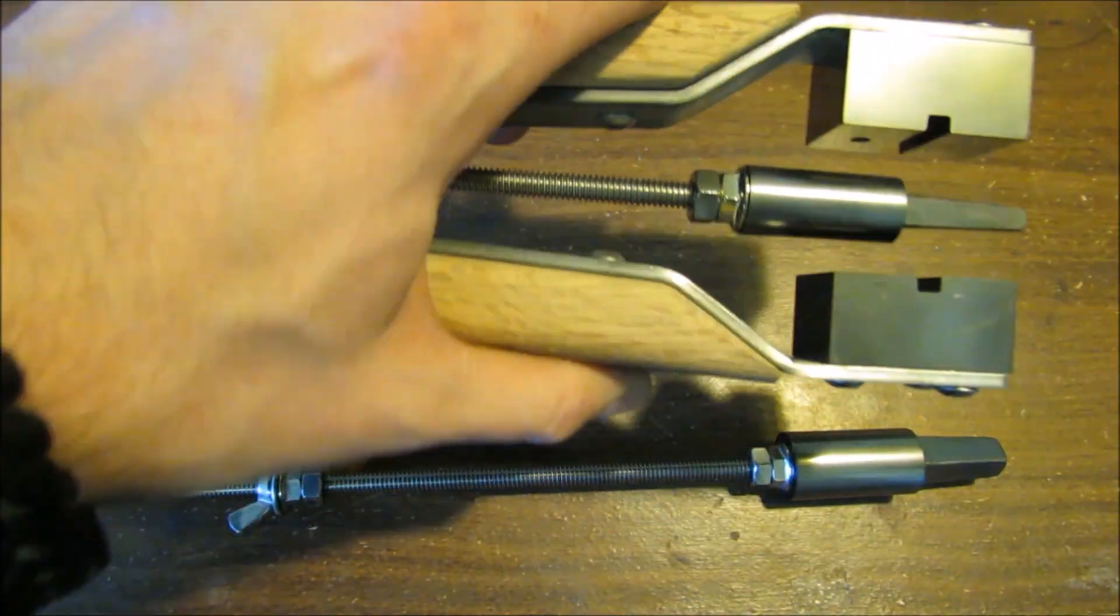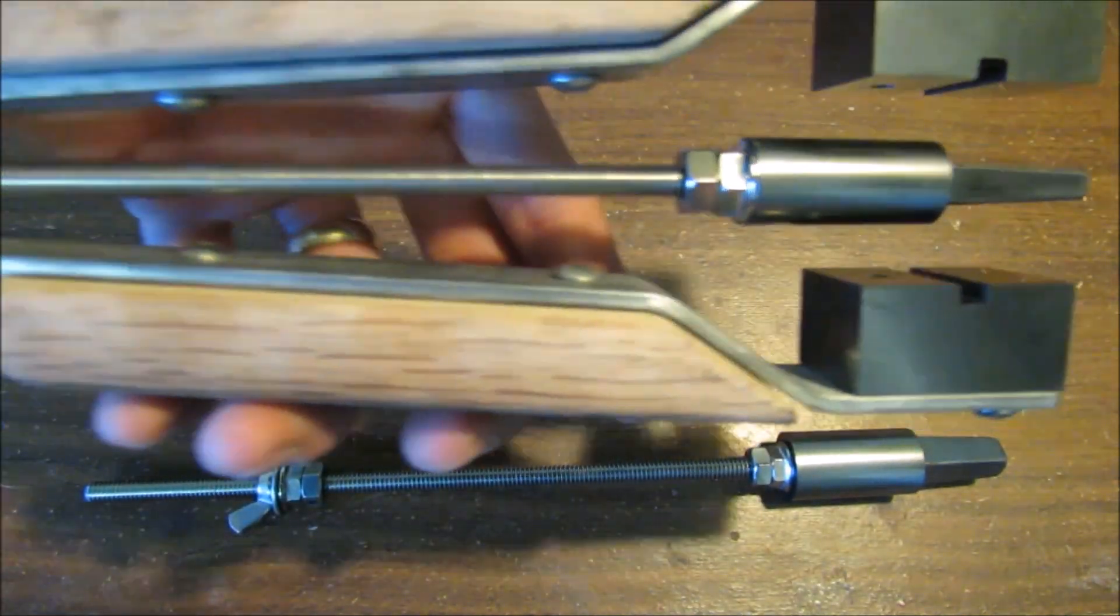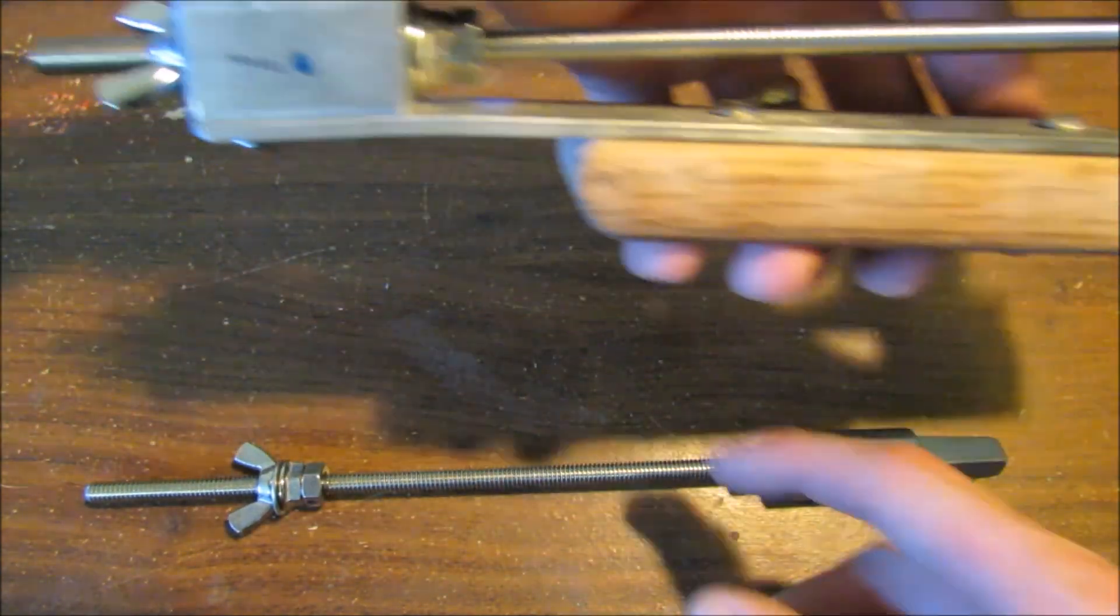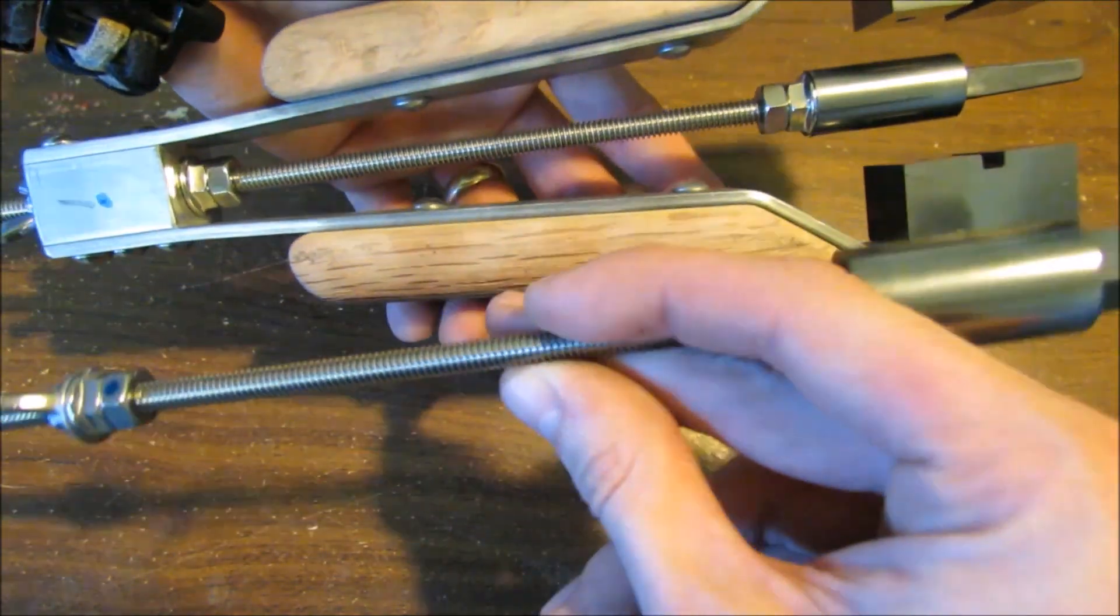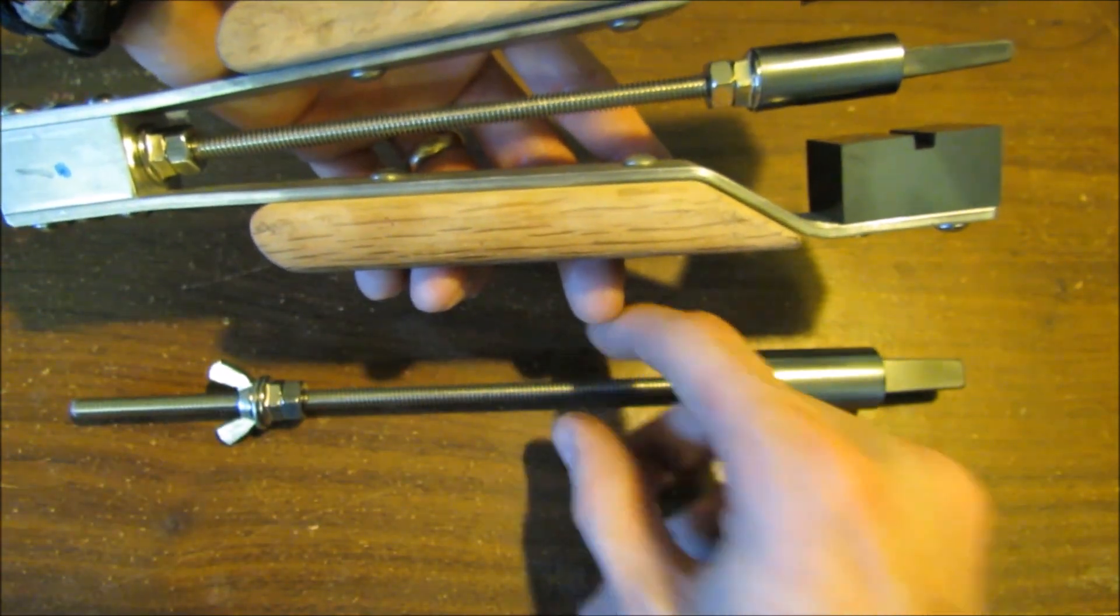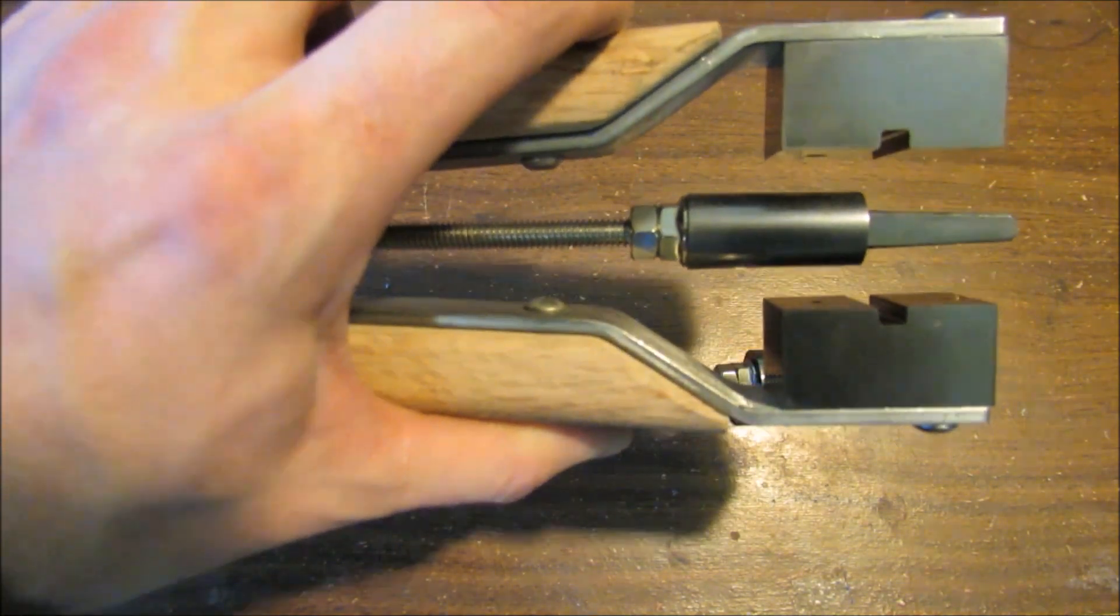The two graphite paddles clamp down at an angle to give the perfect outside taper. In the center is the joint former, which is exchangeable with just one wing nut. This model can either form a 10 millimeter or 14 millimeter female joint. Today we're going to create a 10 millimeter female joint.